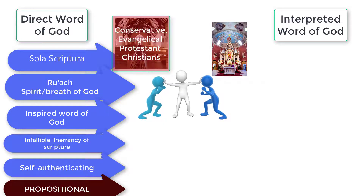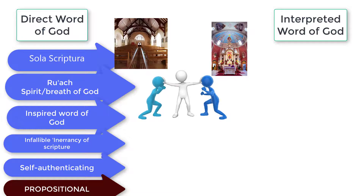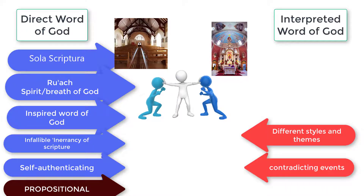And now for some criticisms. Similar events recorded in the Bible are told differently. Take for example the account of Jesus praying in the Garden of Gethsemane, Peter's confession at Caesarea Philippi, and Jesus' appearances after his death. These accounts appear to contradict each other. The different styles of writing and themes are too many for it to be the direct word of God. Take for instance the theme and style in the Song of Solomon and in the Book of Revelation. There has to be, to some degree, human authorship.